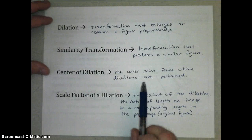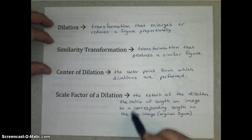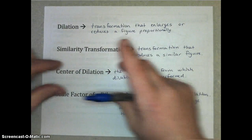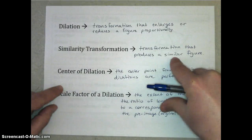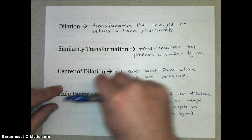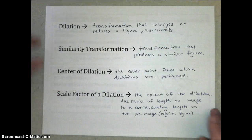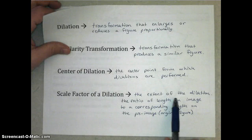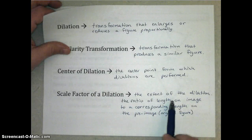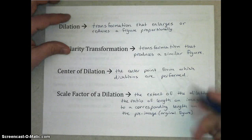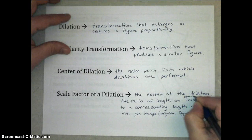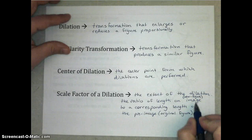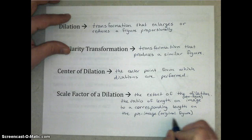The center of dilation is that center point from which the dilation is performed. You can either start with a point and expand or shrink around it, or start with a point outside and expand or shrink toward it. The scale factor of a dilation is the ratio of the length on the image — the new figure — to a corresponding length on the pre-image, or the original figure.